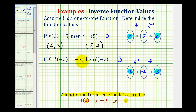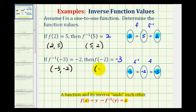This also tells us that the inverse function contains the point with an x coordinate of negative three and a y coordinate of negative two. And this tells us the function contains the point with an x coordinate of negative two and a y coordinate of negative three. Again, notice how the coordinates have been switched. I hope this helps.